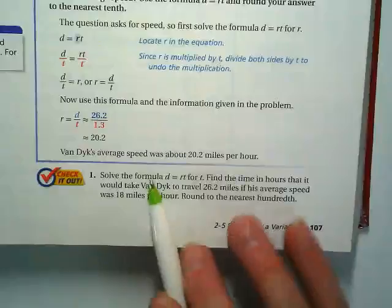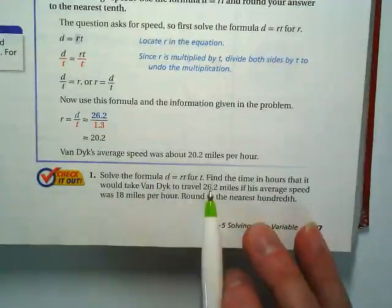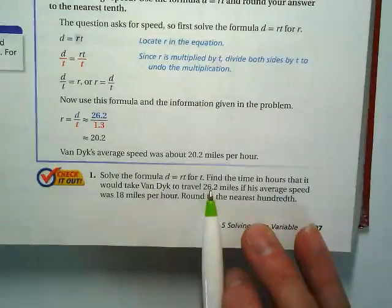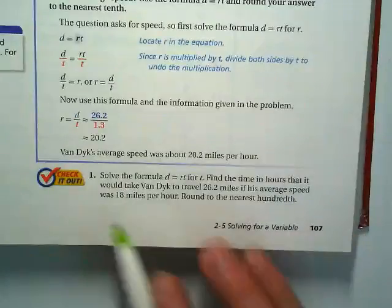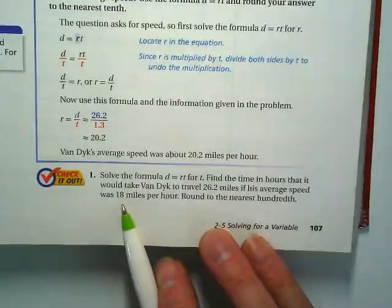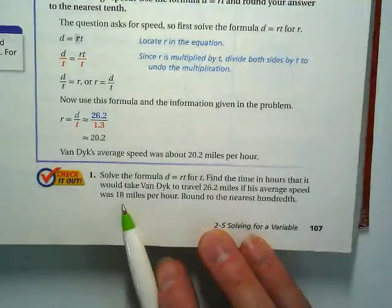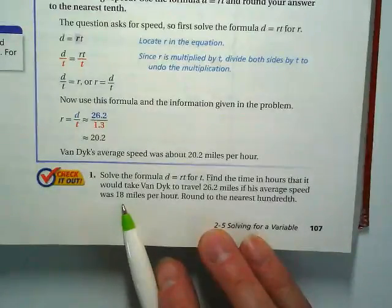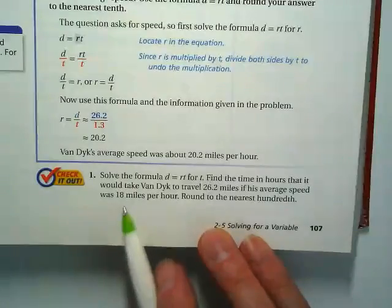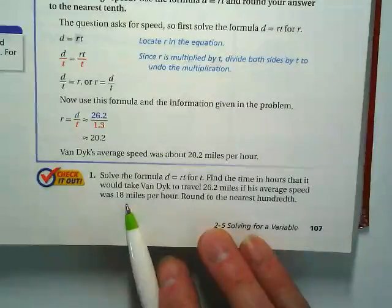Find the time in hours that it would take Van Dyke to travel the same distance for a marathon if his average speed was what? That's way faster than he actually went. Because he went 20 point something miles per hour. Now they're saying, what if he could do it in 18 miles per hour?